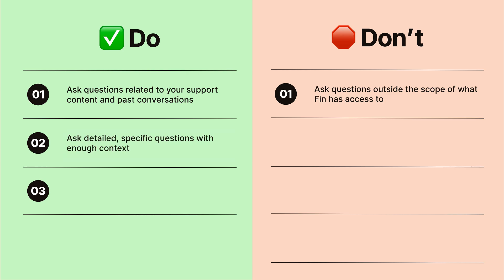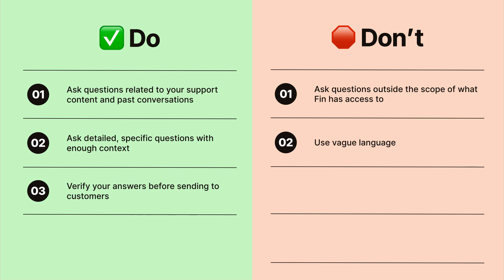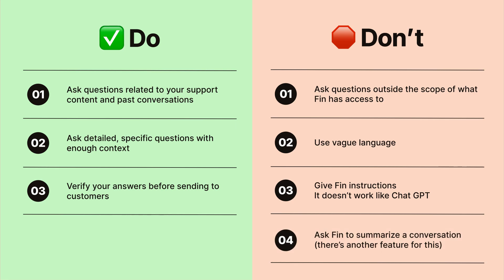Two: ask detailed, specific questions with enough context. And the flip side of this — don't use vague language. You want to make it as easy as possible for Fin to find the answer. Three: always verify your answers before sending. And now the last two don'ts: don't give Fin instructions — it doesn't work like ChatGPT. And don't ask Fin to summarize the conversation. There's actually another feature for this called AI Summarize, in case you didn't know.